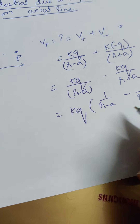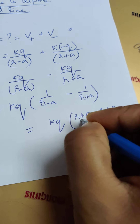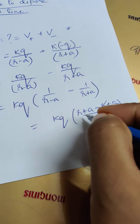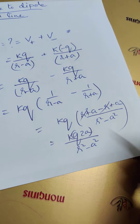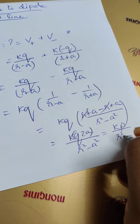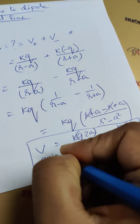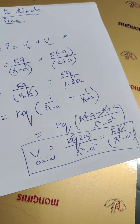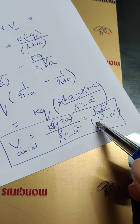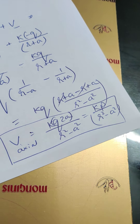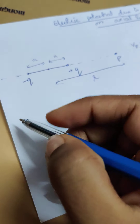Taking LCM gives kq times [(r+a) − (r−a)] / (r²−a²). The r terms cancel, leaving kq × 2a / (r²−a²). Since q × 2a equals the dipole moment p, this simplifies to kp/(r²−a²). This is the potential on the axial line. For a very short dipole or when r is much greater than a, we can approximate a ≈ 0, giving kp/r², which is inversely proportional to r².